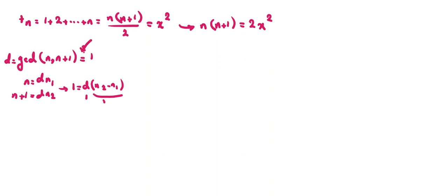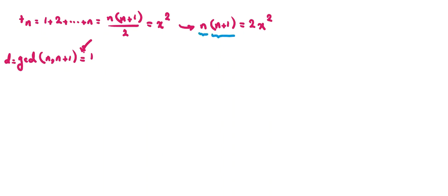We have proved the gcd is 1. In the next step, because n and n+1 are relatively prime and their product equals 2x², we consider two cases based on which factor carries the factor of 2. Case 1: n is a perfect square y² and n+1 = 2z².